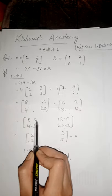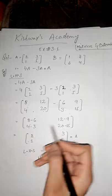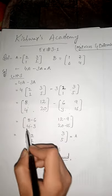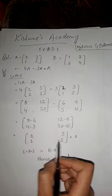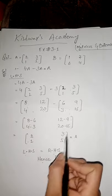Now we have written that 8 minus 6, then 2, 12 minus 9 is 3, 4 minus 3, then 1, and 20 minus 15 is equal to 5. Now this is the total value: 2, 3, 1, 5.